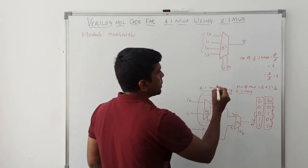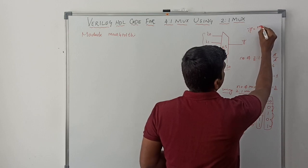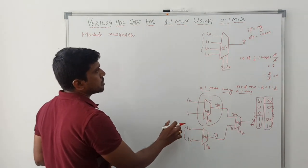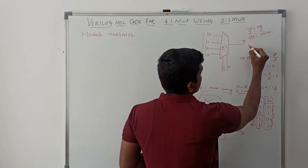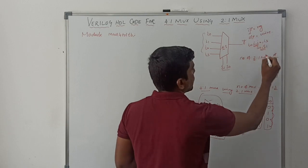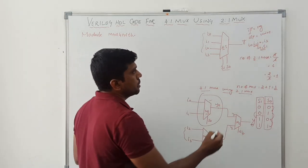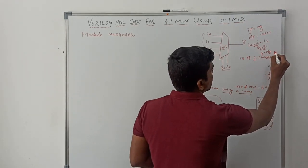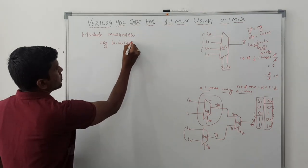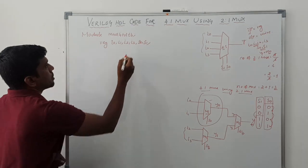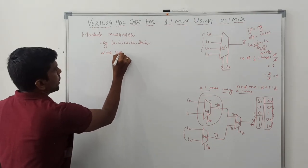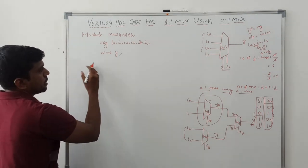In the testbench Verilog HDL code, inputs are represented as registers and outputs are represented as wires. In this design we have six inputs: i0, i1, i2, i3, then selection line s0 and selection line s1. These six signals are considered as input signals. The output is y, so y is the output signal. Declare: reg i0, i1, i2, i3, s0, s1 — these six variables are declared as registers. Then: wire y.